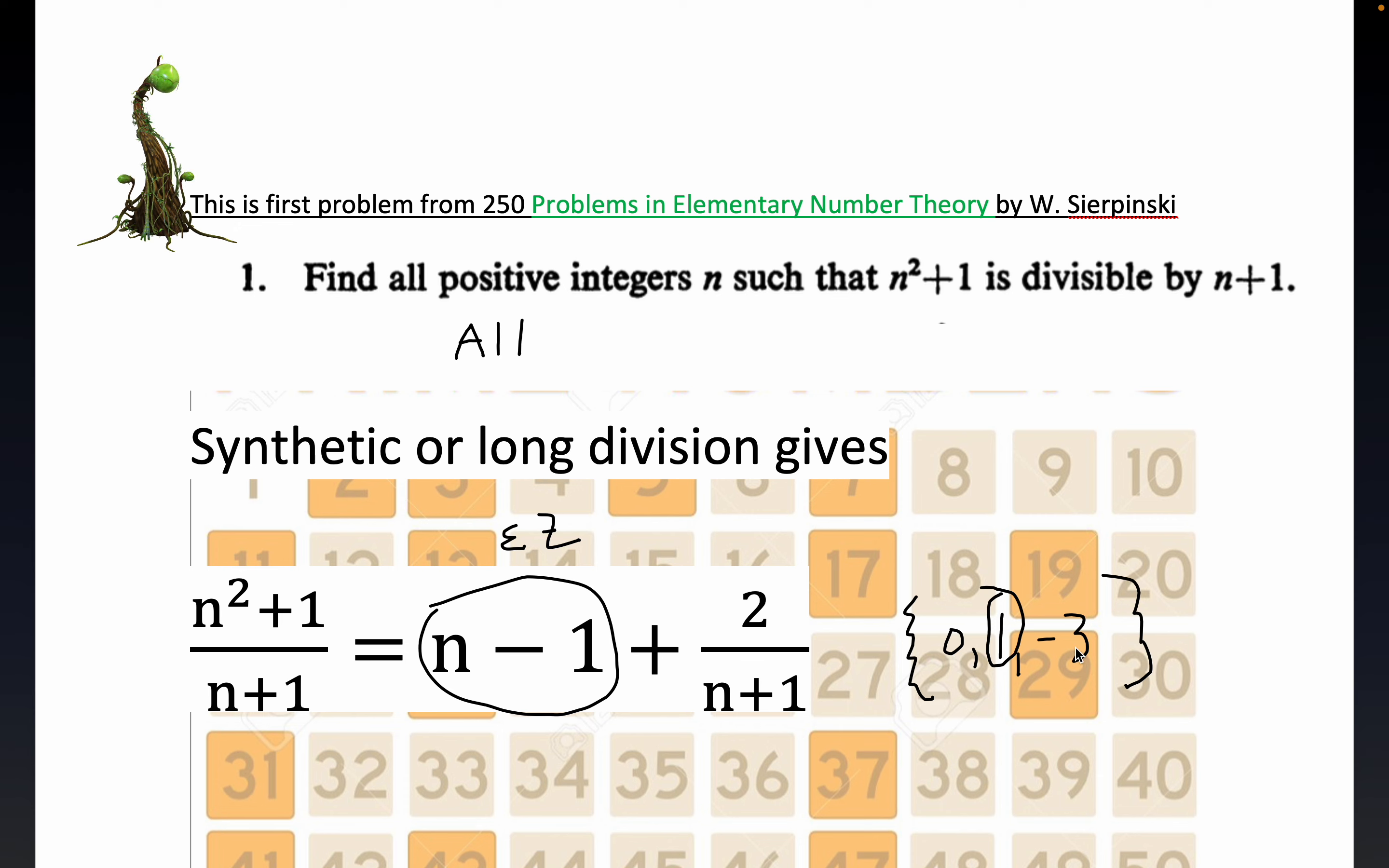But if you write it in this fashion right here, it's easy to see that 0, 1, and negative 3 are the only possible integers such that this quotient is an integer. Okay, so that is the problem. I like this approach. It's a broader approach, I think, rather than just trying to factor this and get the solutions.